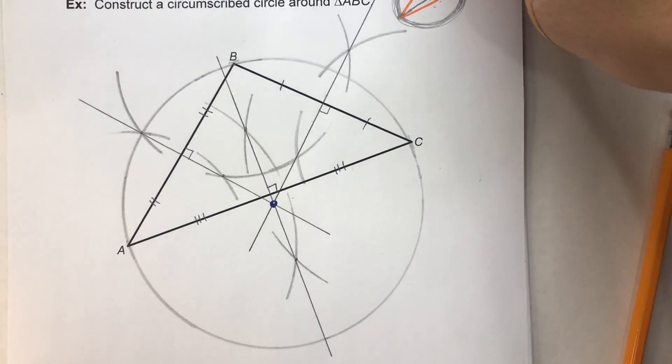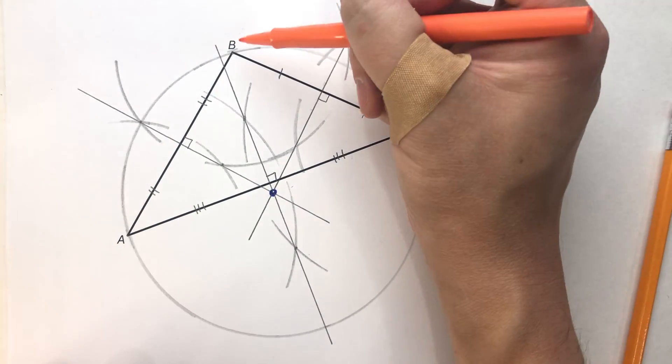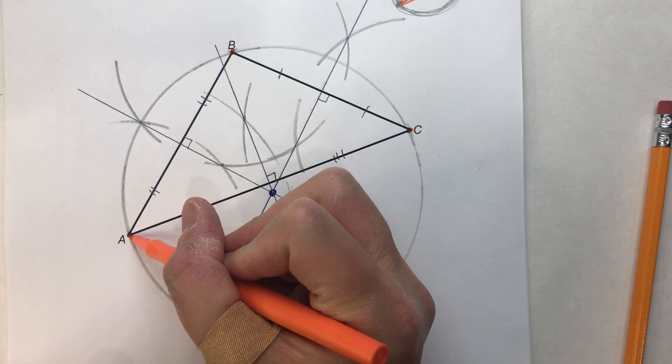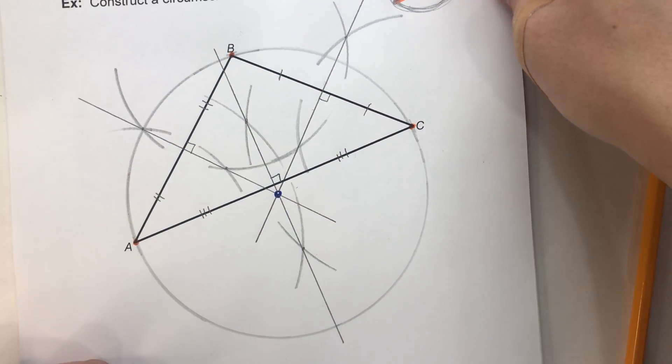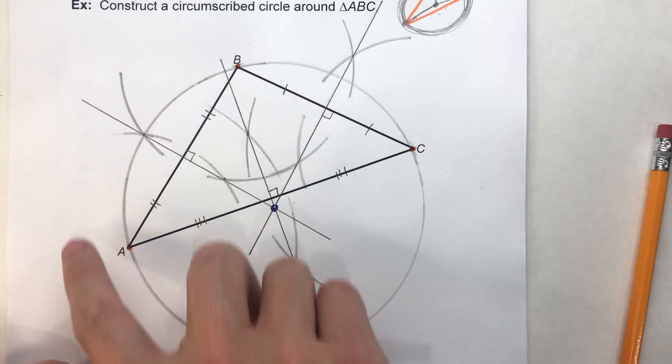There we go. Can you see my circle? Notice it should hit exactly point B, point C, and point A. And I would say it's pretty good. I might be a little off here. But it looks pretty good.